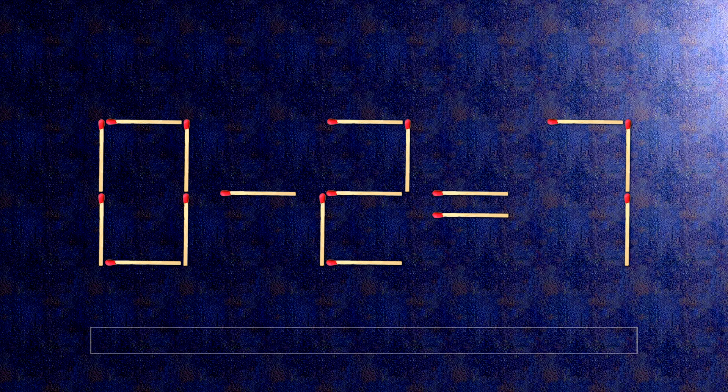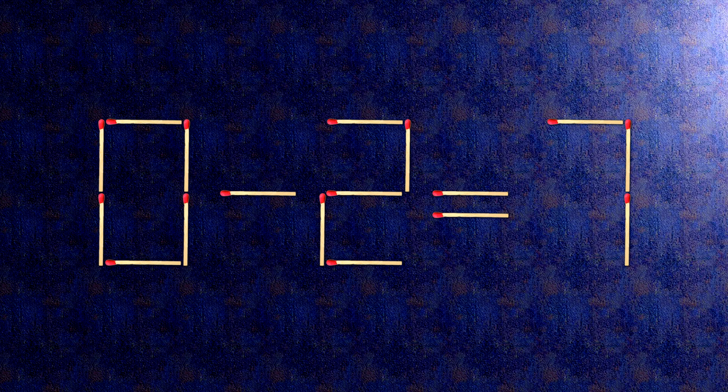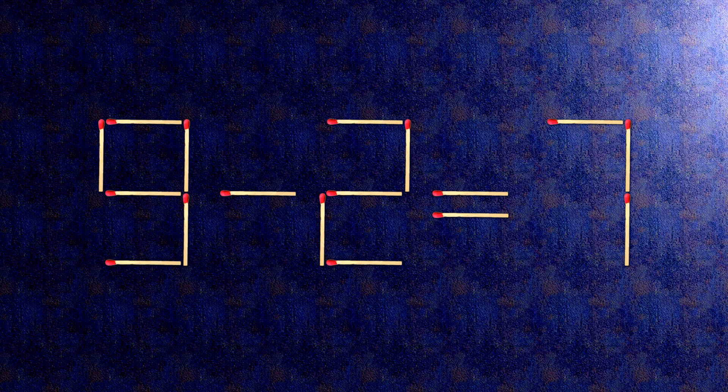How this puzzle is solved: all we need to do is move this match right here. When we check the condition, 9 minus 2 is 7. The task is done and the puzzle is solved.